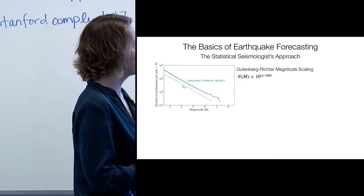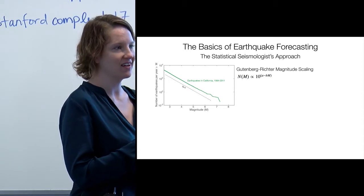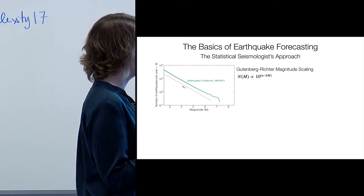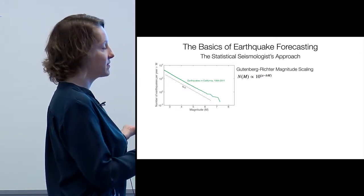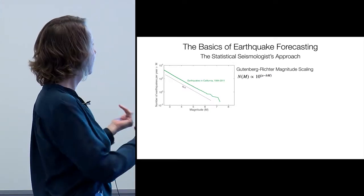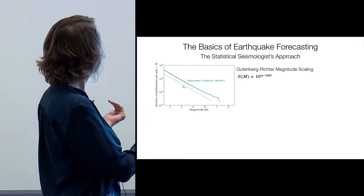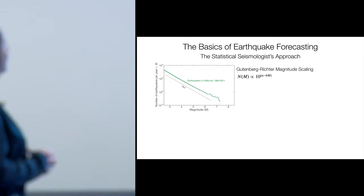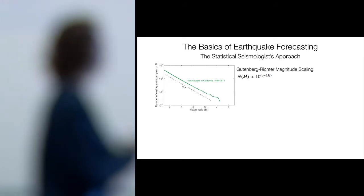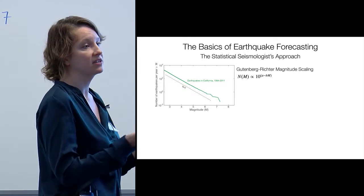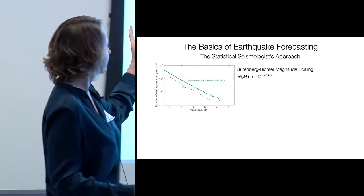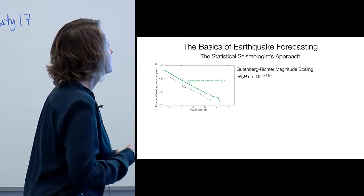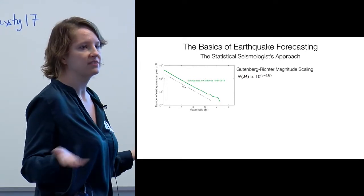There's a number of important scaling laws that go into earthquake forecasting. The big one you probably all have heard of is the Gutenberg-Richter magnitude scaling. Basically, the number of earthquakes scales with magnitude as an exponential, or with energy as a power law. This x-axis here is a log scale of energy.